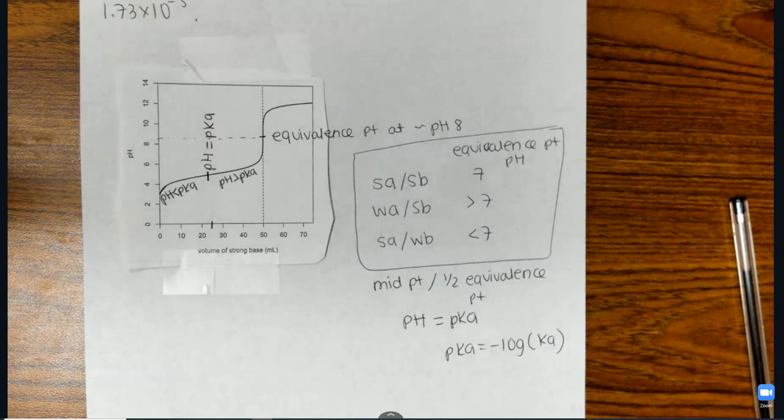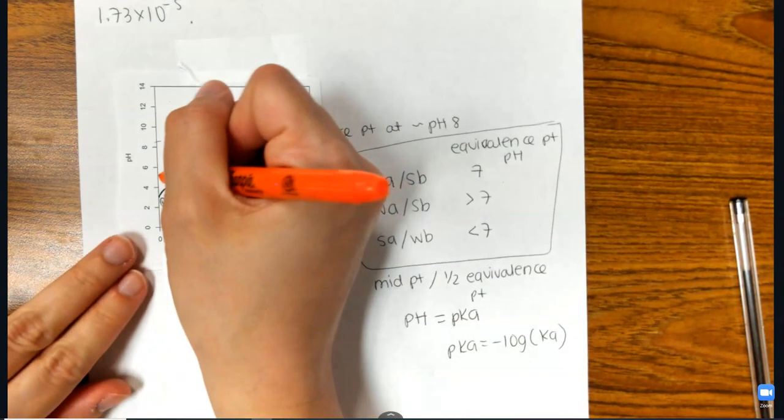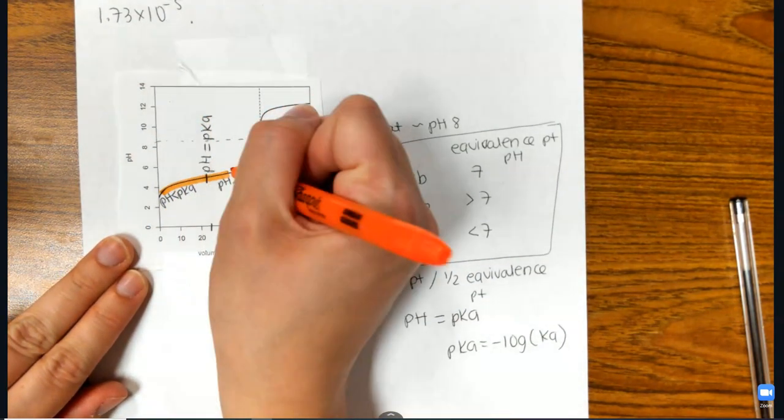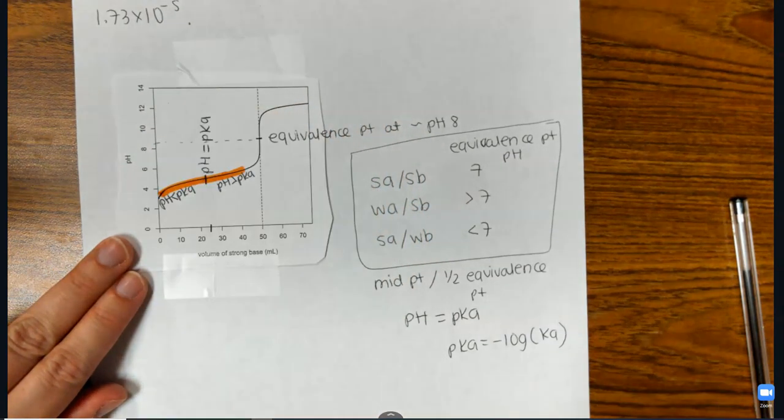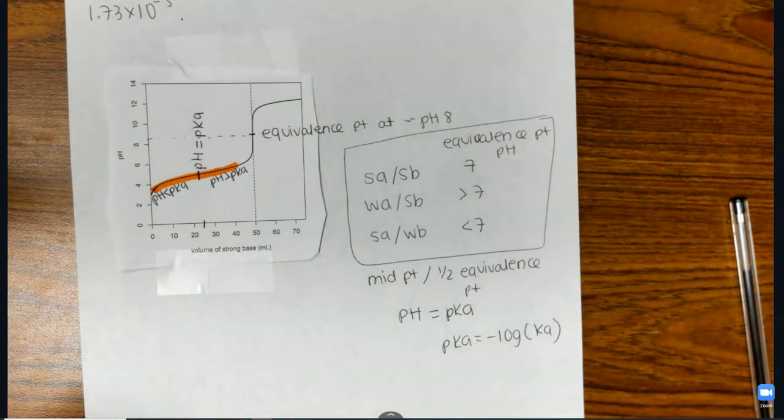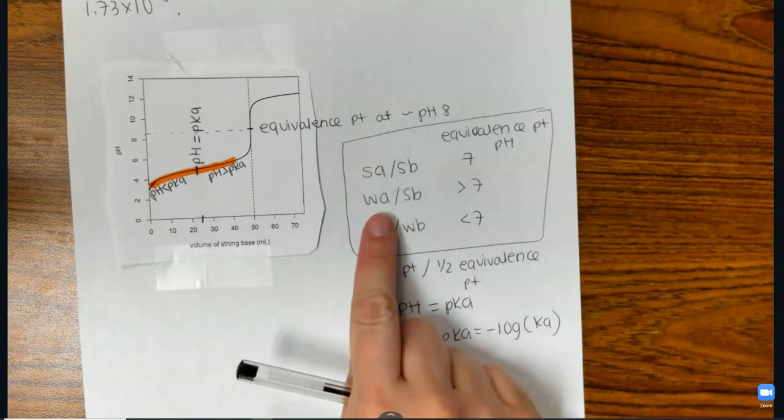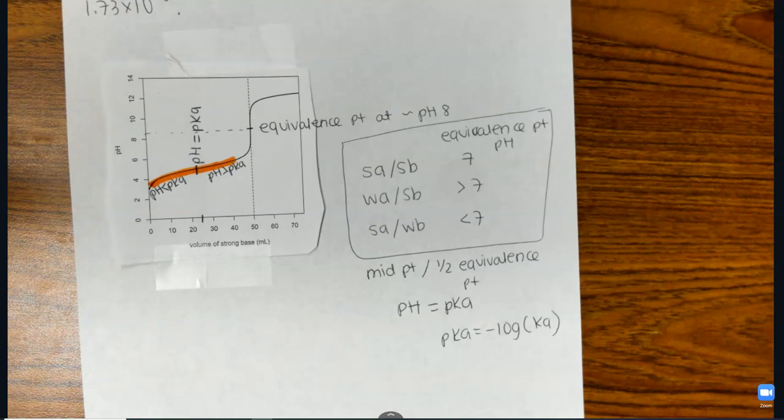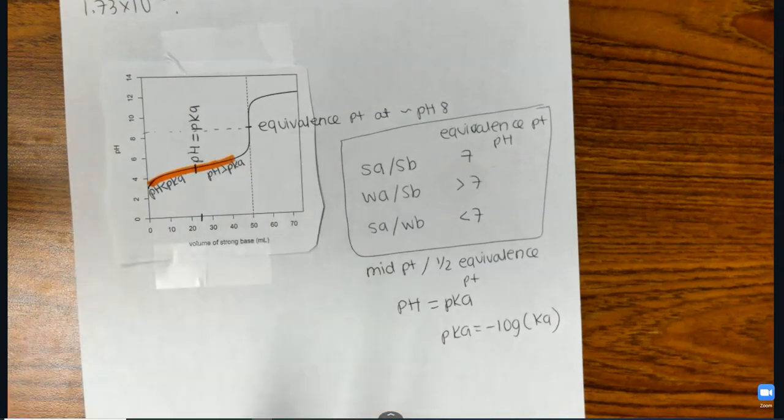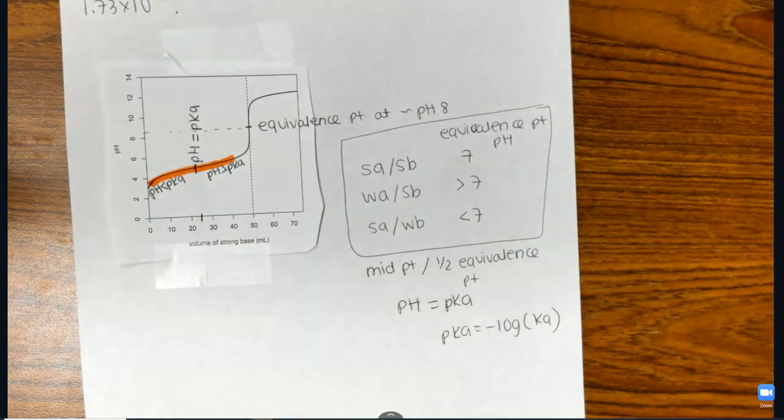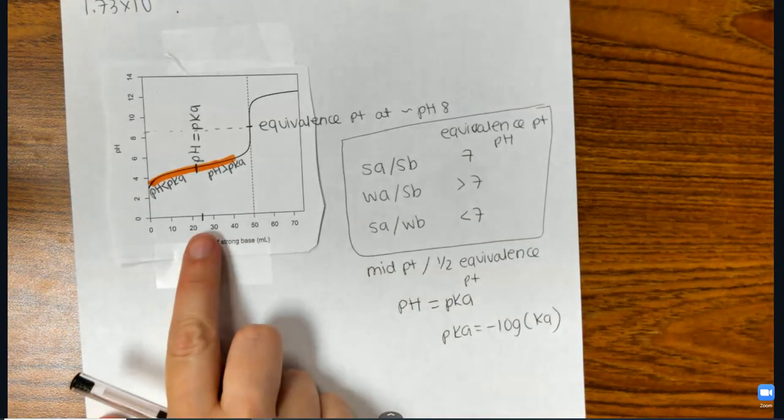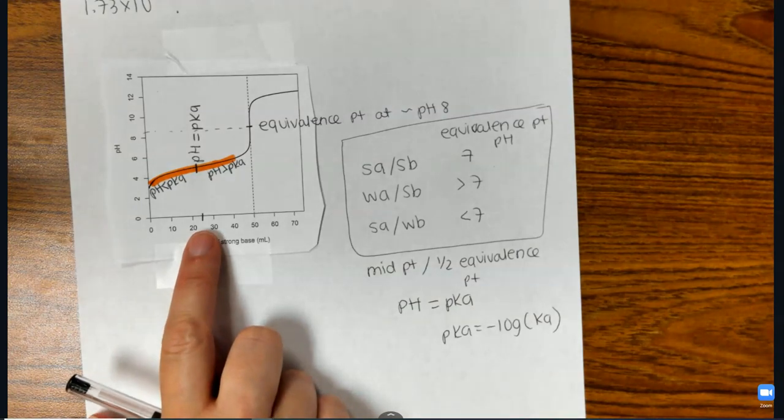And in this part of the curve on a weak acid-strong base titration, it is a buffer. This is a buffer solution. If you aren't familiar with what a buffer is, I have a video that talks about buffers. But buffer is when you have a weak acid and its conjugate base, which is present right here. So there's just a little bit about reading these graphs. A lot of important things. That midpoint is super important when solving these problems.